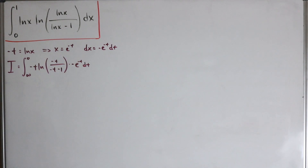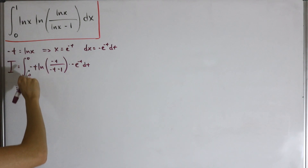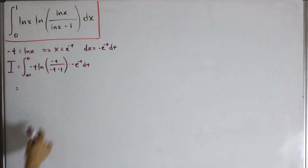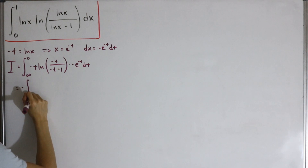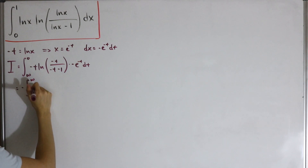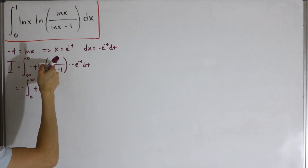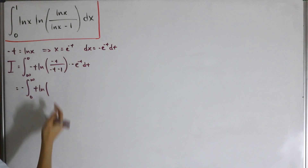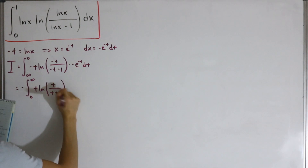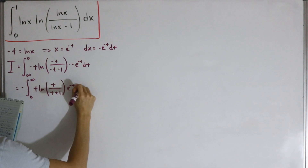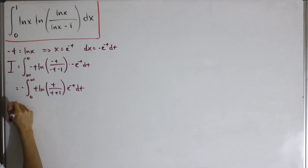Switching the bounds introduces a negative, and combined with the other negatives — a negative on top and a negative on the bottom — we simplify to: the negative integral from 0 to ∞ of t divided by (t + 1) times e^(-t) dt.